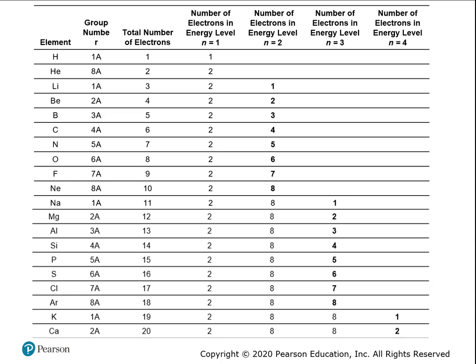There's a chart showing all of the first 20 elements. Notice that the group number matters here. Hydrogen is in group 1 and has one electron in its outer energy level. Lithium also has one outer electron. That outer electron number matches the group number. This works for the first two columns and the last six columns — at the top of those columns you see a number in front of a capital A, and that's the group number, telling you how many electrons are in the outermost energy level.